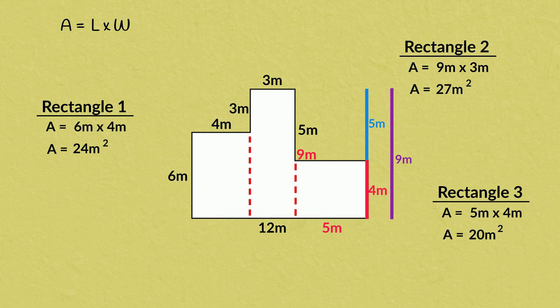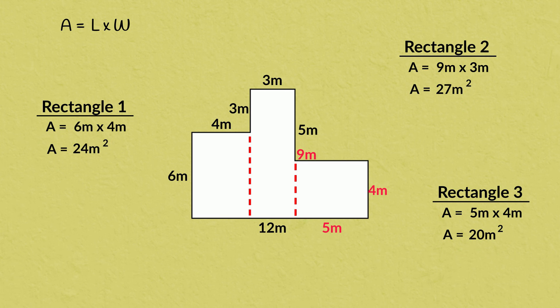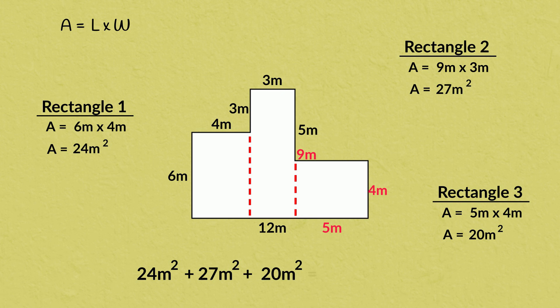Now all that's left is adding the area of each rectangle to find the total area of our compound shape. 24 meters squared plus 27 meters squared plus 20 meters squared equals 71 meters squared.